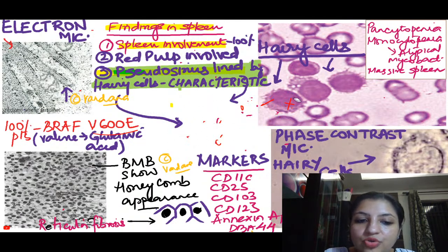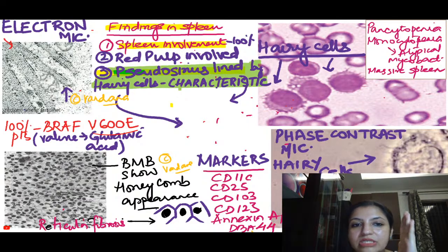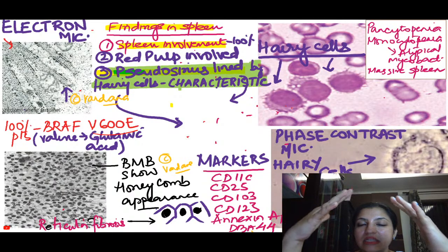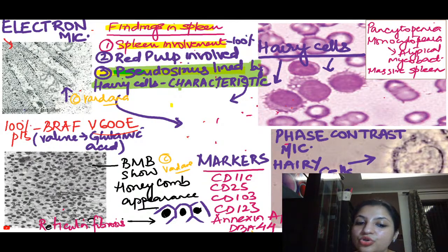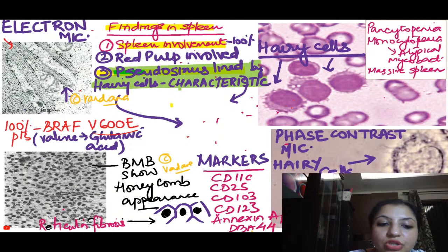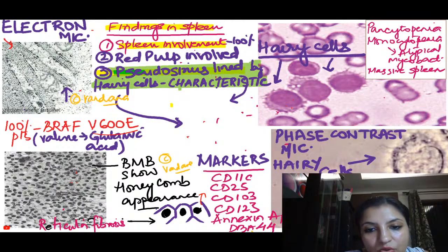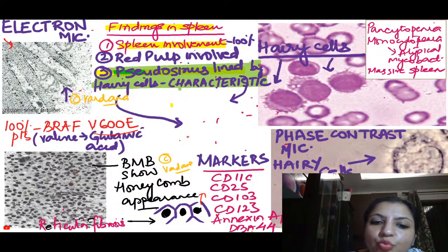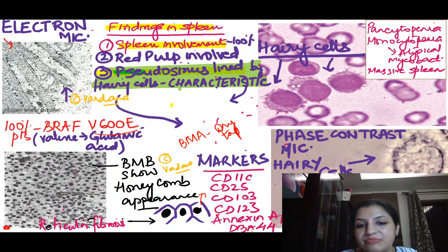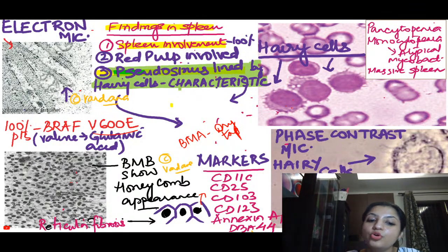Now let's look at what you will see in the bone marrow. The bone marrow typically has fibrosis — reticular fibrosis — and these cells have hairy projections, so there will be a halo around them. They show a characteristic fried egg appearance because nothing comes close to them; the cells appear to lie in a lacuna. This fried egg appearance is seen in bone marrow biopsy. In contrast, bone marrow aspirate will be a dry tap because of fibrosis — no cells can be aspirated.